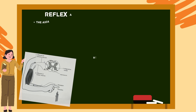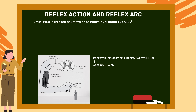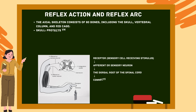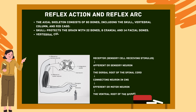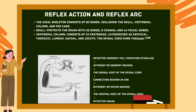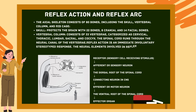Reflex action is an immediate, involuntary, stereotyped response. The neural elements involved follow a pathway called the reflex arc. The reflex arc includes: a receptor or sensory cell receiving the stimulus; an afferent or sensory neuron entering via the dorsal root of the spinal cord; a connecting neuron in the CNS; an efferent or motor neuron exiting via the ventral root of the spinal cord; and the effector organ.